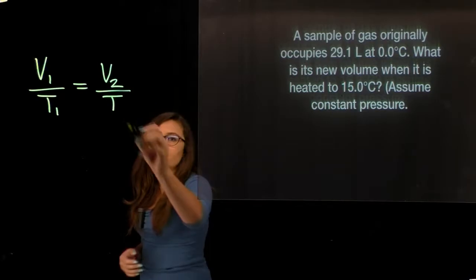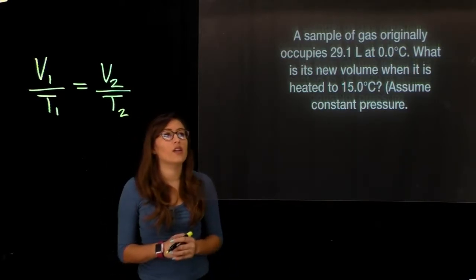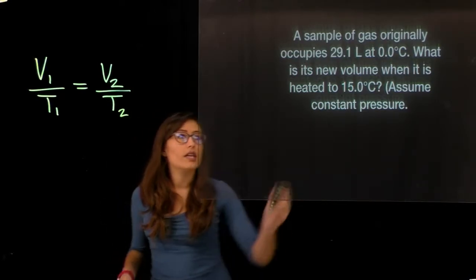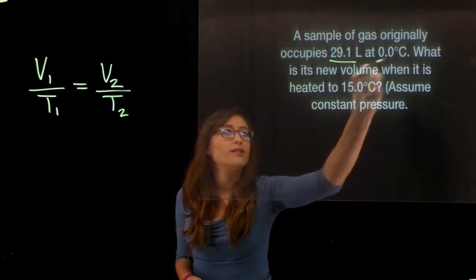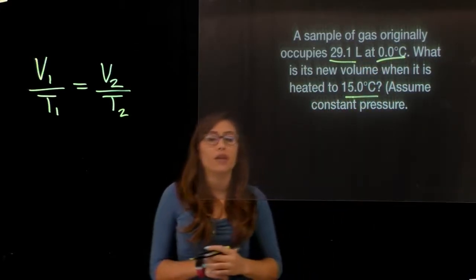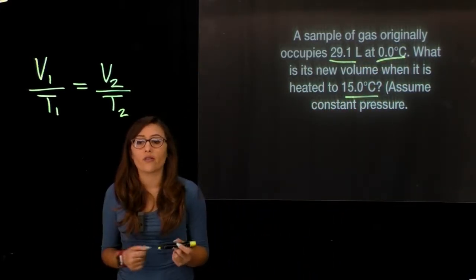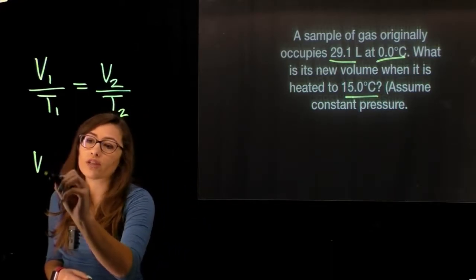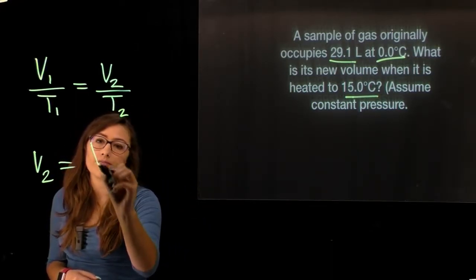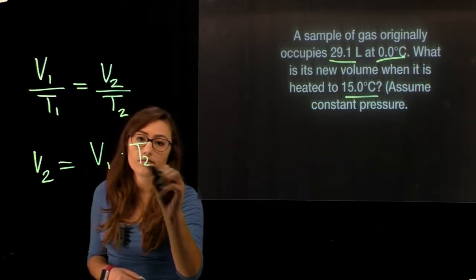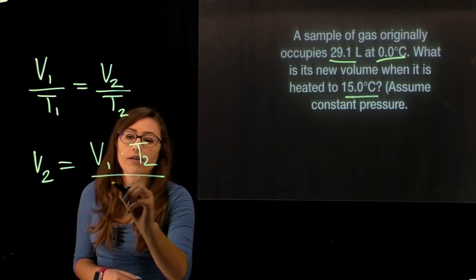Let's look at what the problem gives us. They give us our original volume and temperature, and they're giving us our final temperature. So we're looking for the final volume. Let's rearrange this equation like we did previously in order to solve for our final volume.